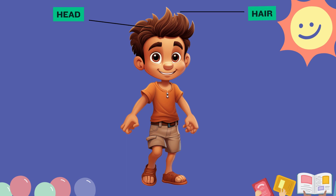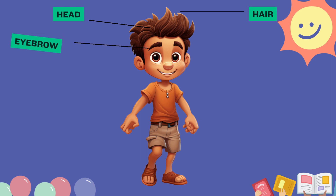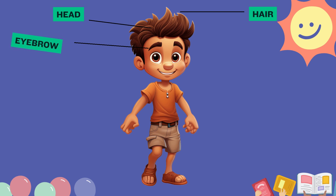Hair. Each hair has a hair shaft and a hair root. Eyebrow. An eyebrow is an area of short hairs above each eye.